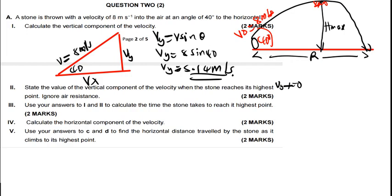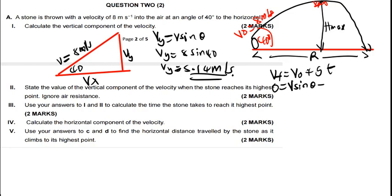Part three is saying: use your answers from parts 1 and 2 to calculate the time the stone takes to reach its maximum height. To find the time to reach maximum height, we are going to use the formula: V final equals V initial plus G times T, because we don't have the height. I can't use a formula that gives me height since I'm trying to find time.